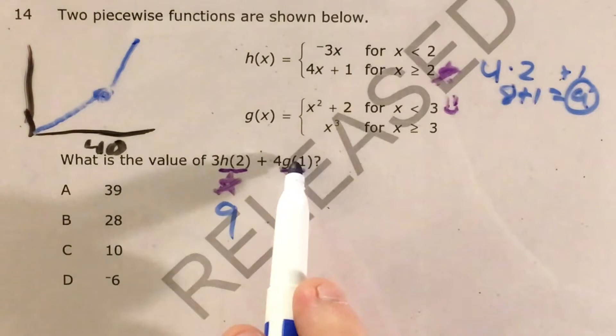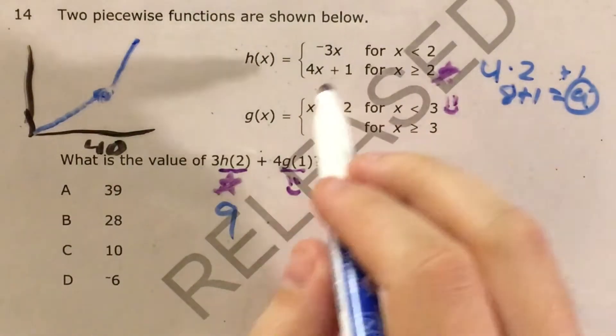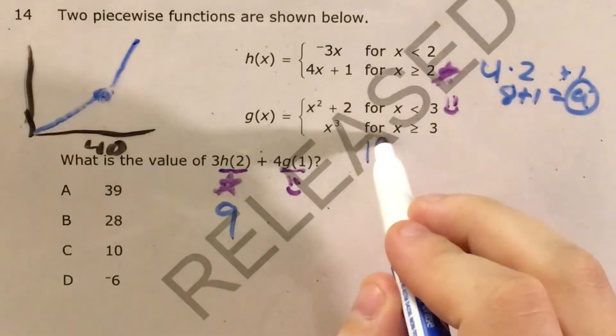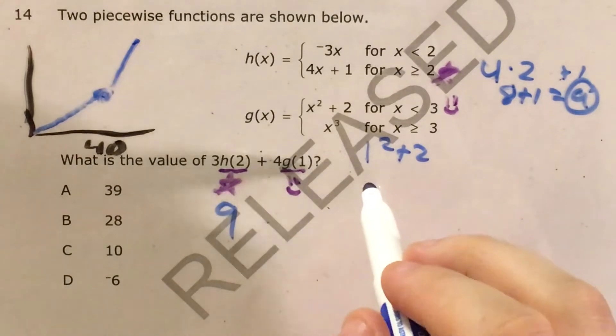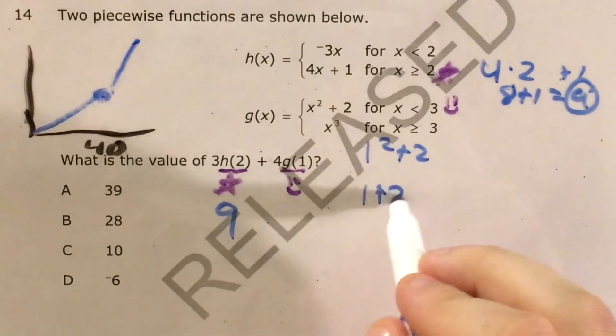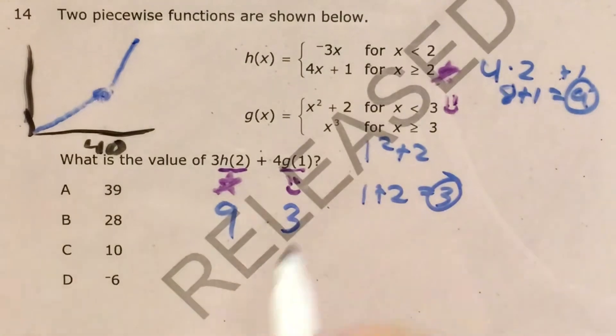And now to plug in 1 for g here, that's going to end up as 1 squared plus 2. Evaluate my exponent and I get 1 plus 2, which is 3. This is 3.